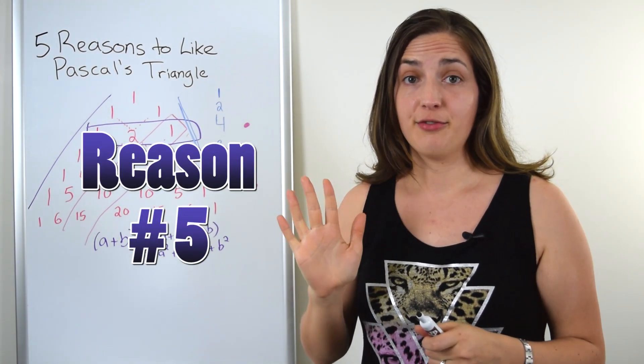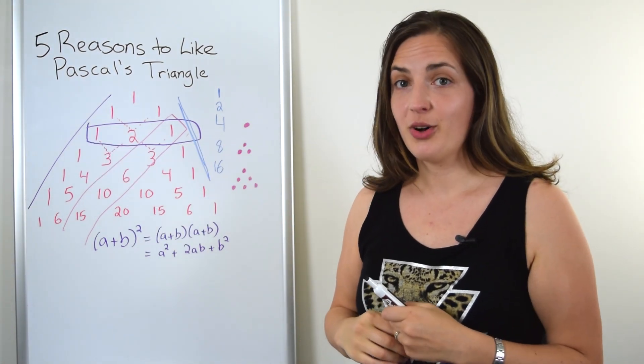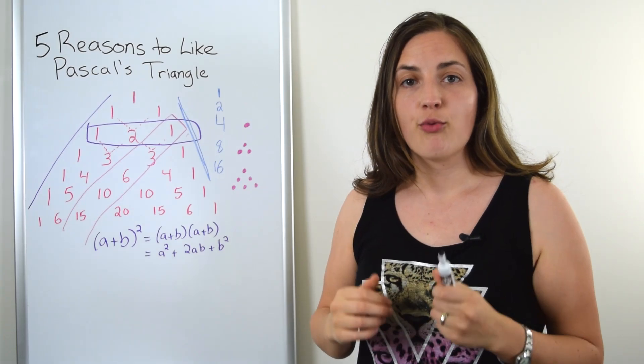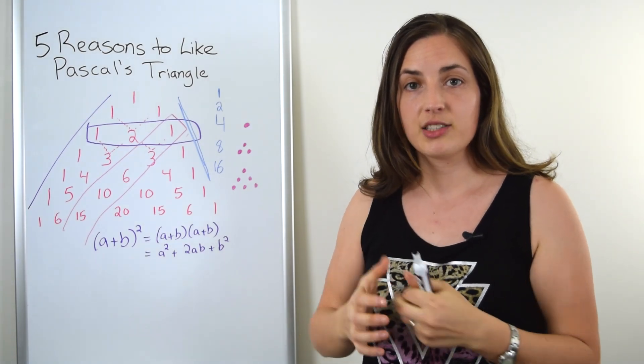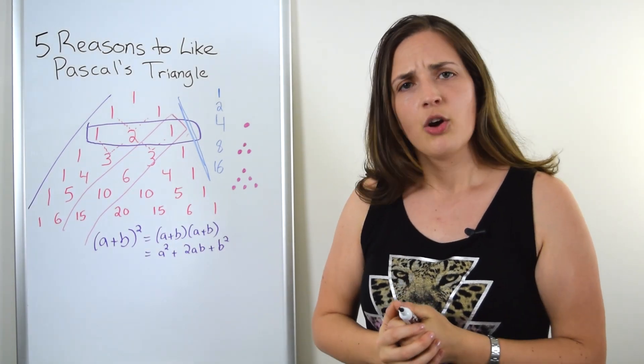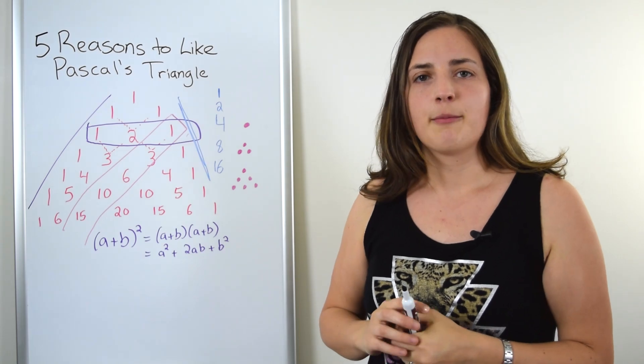Reason number five why Pascal's triangle is so cool is that it tells you the number of ways to select a number of objects from a collection of distinct objects. What do I mean by this? Well, let's take a look at a particular row.